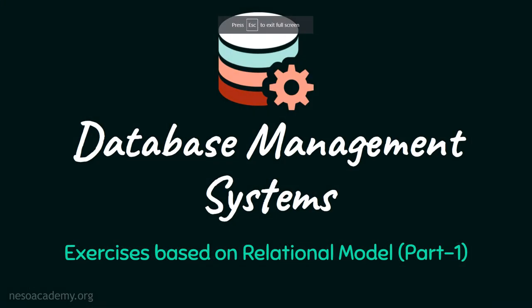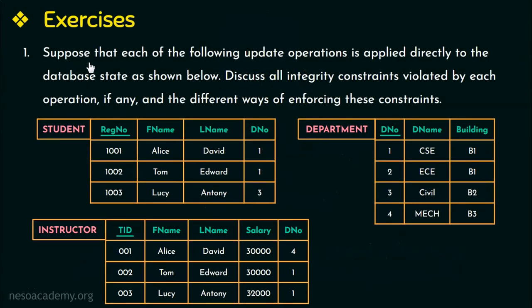Hello everyone and welcome back. In this video, we will be discussing an exercise problem based on relational model concepts. This is part 1 of this video. Suppose that each of the following update operations is applied directly to the database state as shown. Discuss all the integrity constraints violated by each operation, if any, and the different ways of enforcing these constraints.